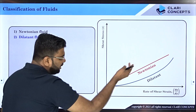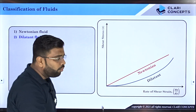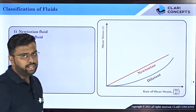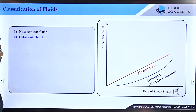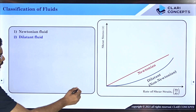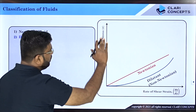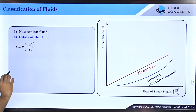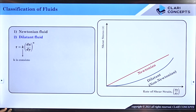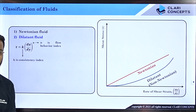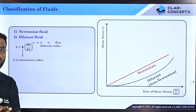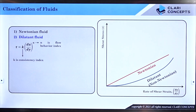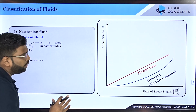For this kind of fluid, the relationship between shear stress and rate of shear strain is given by τ = k(du/dy)^n, where k is the consistency index and n is the flow behavior index. Both k and n depend on the fluid as well as the flow conditions.